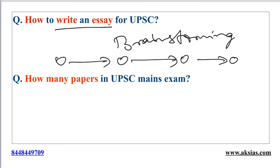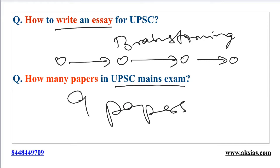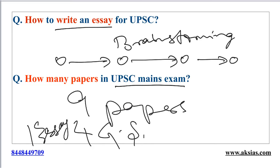The next question is: how many papers are there in the UPSC mains examination? In the UPSC mains examination, there are a total of nine papers, along with English or the regional language which are qualifying papers. Paper one is the essay paper, where you need to write an essay on two topics. Then you have four general studies papers — GS Paper 1, Paper 2, Paper 3, and Paper 4.